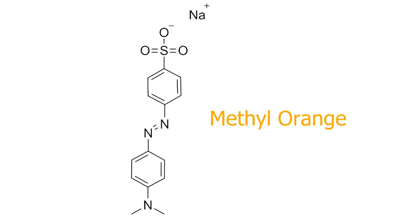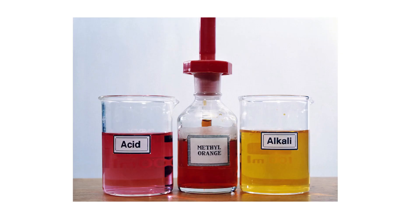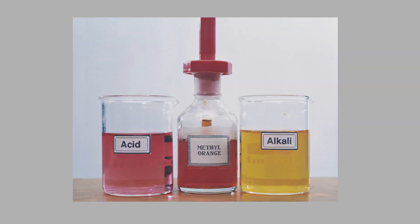In today's video, I am going to be making methyl orange from sulfonylic acid. The main use of methyl orange is as a pH indicator for doing titrations in a lab.